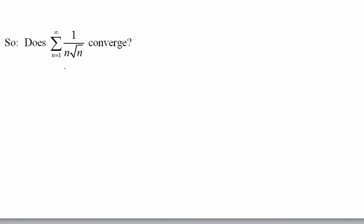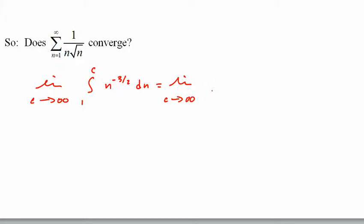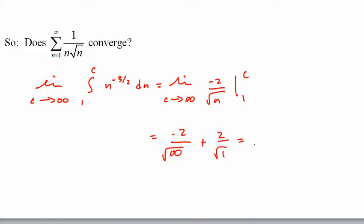For 1/n^(3/2), rewritten as n to the negative 3/2, we take the improper integral from 1 to c. Adding 1 and dividing gives us negative 2 times n to the 1/2. Evaluating from 1 to c as c goes to infinity: negative 2 over the square root of infinity plus 2 over the square root of 1 gives us 2. That just means it converges — we got a specific answer.